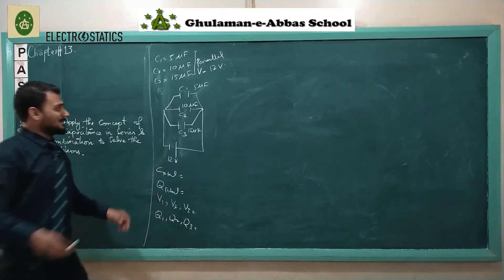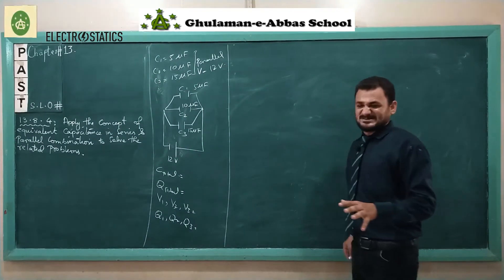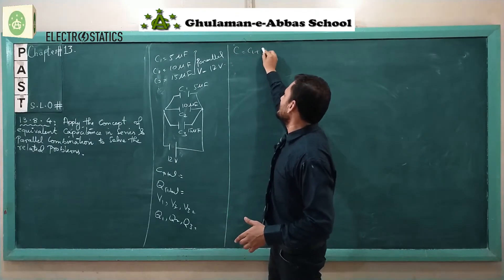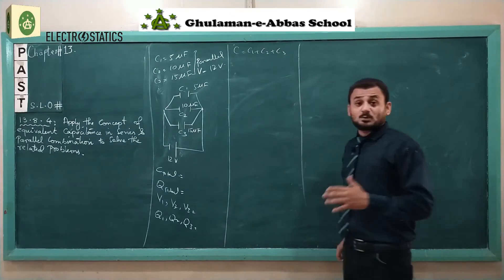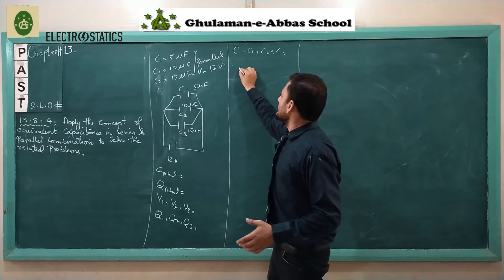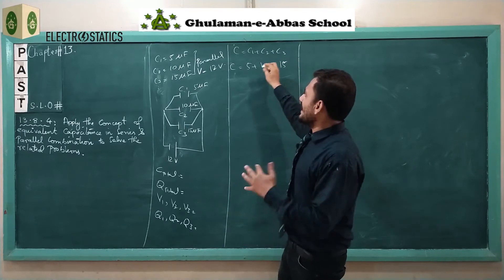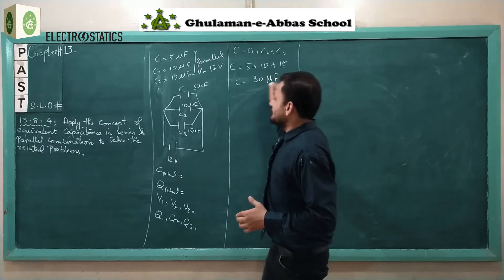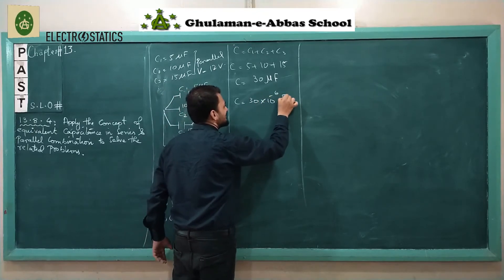First, let's calculate the total capacitance for parallel combination. We know that for parallel combination: C = C1 + C2 + C3. Our values are 5, 10, and 15 microfarad. So total capacitance = 5 + 10 + 15 = 30 microfarad, which is 30 × 10⁻⁶ farad.